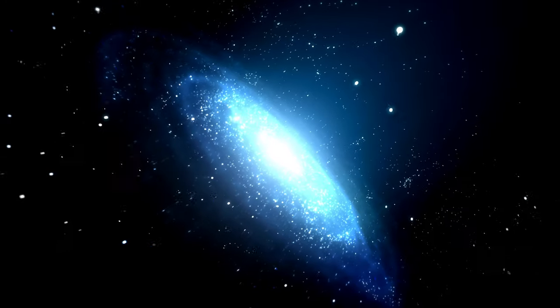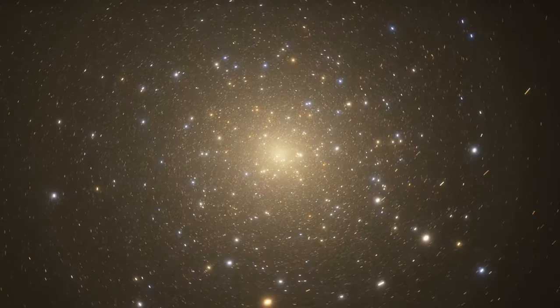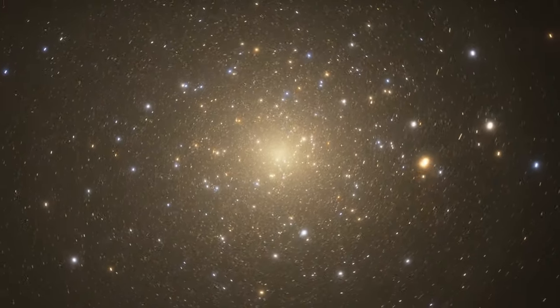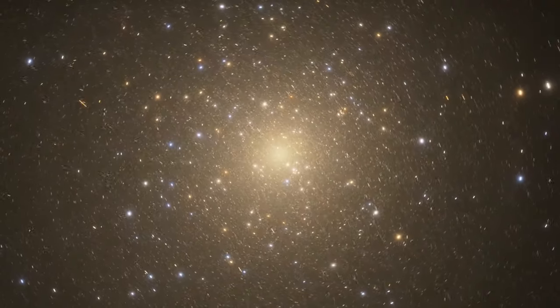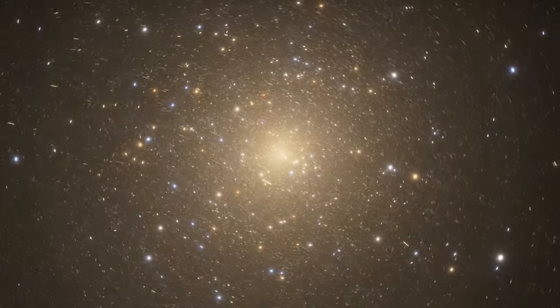M92 is a globular cluster, which consists of densely packed groups of stars believed to have formed simultaneously, thus simplifying the task of determining their ages for astronomers.